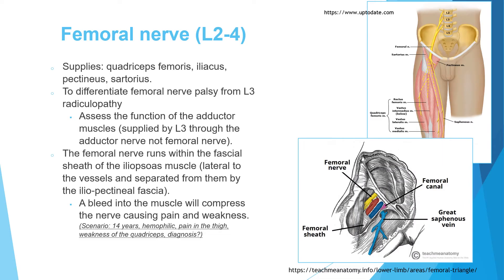The first nerve we're going to talk about is the femoral nerve. The femoral nerve comes from the lumbar roots L2, 3, and 4. It supplies the quadriceps muscle, the main muscle of the thigh. It also supplies the iliacus muscle from the pelvis, the pectineus, and the sartorius muscle.